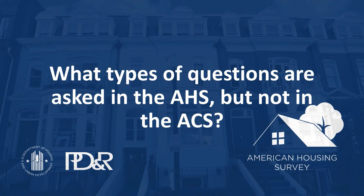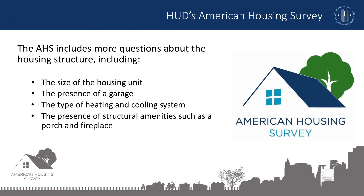Now, let's take a closer look at some of the kinds of questions that are asked in the AHS that are not included in the ACS. For instance, the AHS includes more questions about the housing structure, including the size of the housing unit, the presence of a garage, the type of heating and cooling system, and the presence of structural amenities such as a porch and fireplace. The AHS also includes questions about appliances such as washer, dryer, and dishwasher that are not found in the ACS.